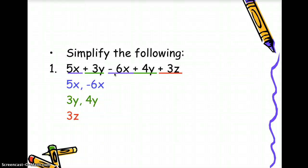Now, let's add the terms within the group. So 5x plus negative 6x is negative x. 3y plus 4y is 7y, and then you have 3z. That's your simplest form.